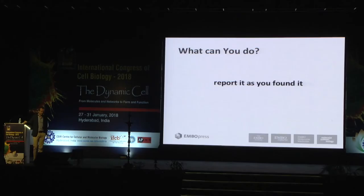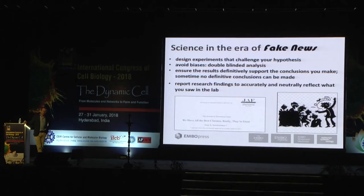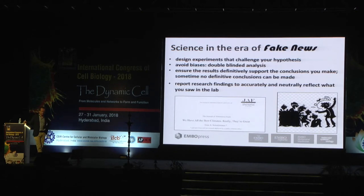It's crucial that we start evaluating scientists better at the level of research funding, because at the moment we're relying entirely on journals to make these calls. What can you do as a researcher to report your work better? You have to report your findings as you found them in an honest and unbiased manner. Publishing is not about storytelling — it's about reporting your findings in a way that is neutral and as unbiased as possible. You have to design your experiments in a way that actually challenges the hypothesis you pose. You're not just trying to design experiments that support your favorite hypothesis — you're trying to challenge it.